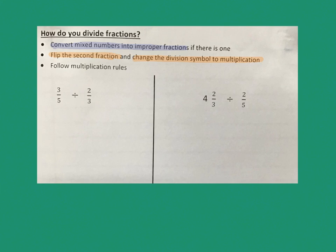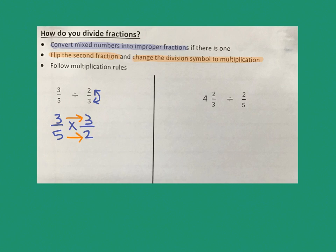Here's my first fraction. I'm going to flip the second one upside down — so now it's going to be 3 over 2. I'm going to change the division symbol to multiply, and we never change the first one; it stays the same. Once I do all that, I simply go straight across: 3 times 3 is 9, and 5 times 2 is 10. My final answer is 9 tenths.